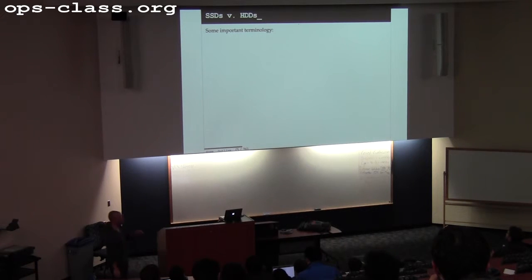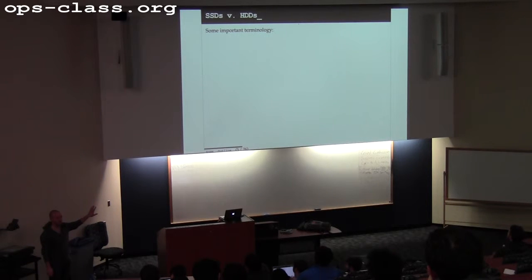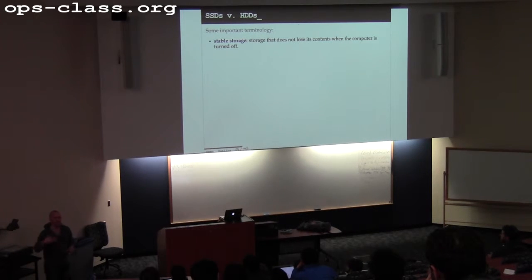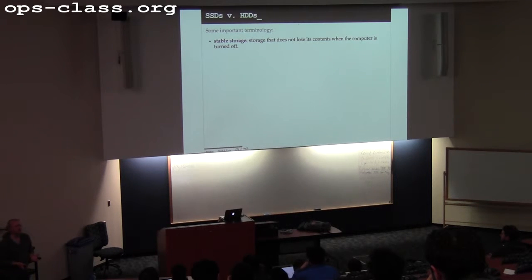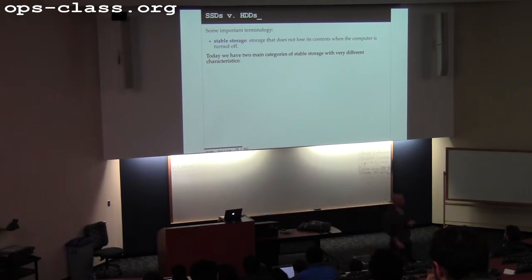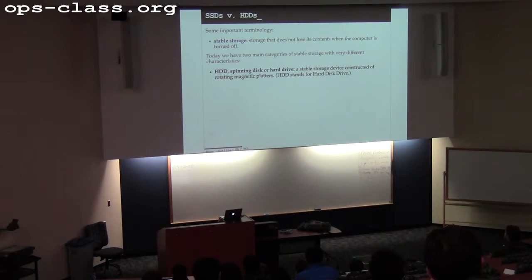Let's talk about something new: discs. Stable storage is the general catch-all term describing a variety of technologies — storage that doesn't lose its contents when powered off, as a way to hold contents for a long period of time. There are two primary types of stable storage we're going to talk about: one is sort of the past and the other is the future.